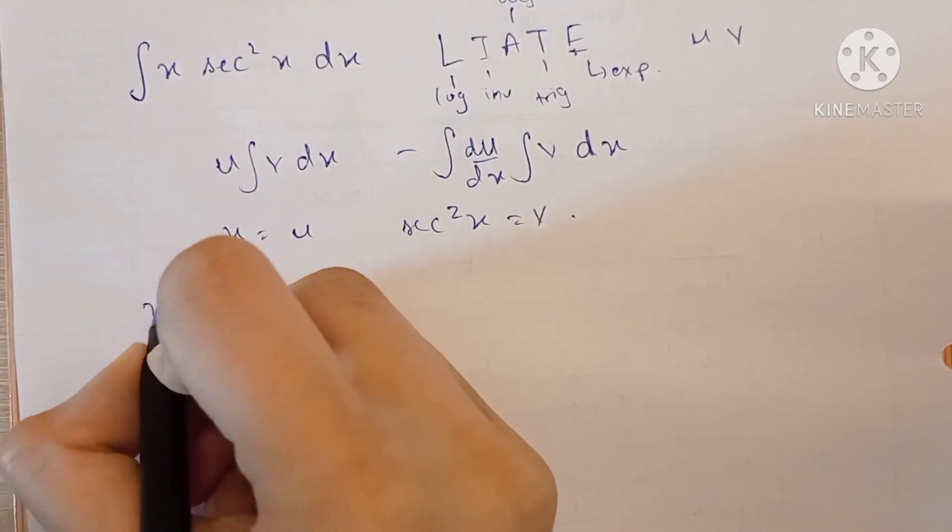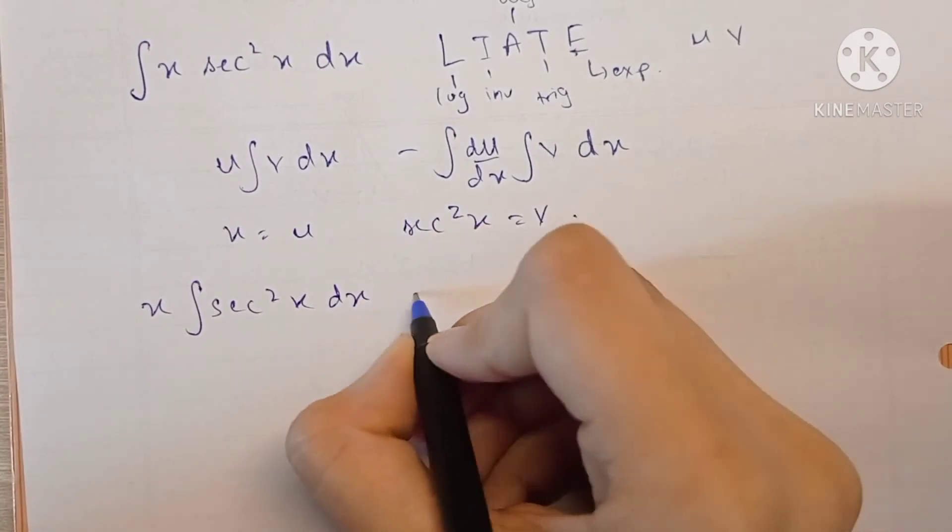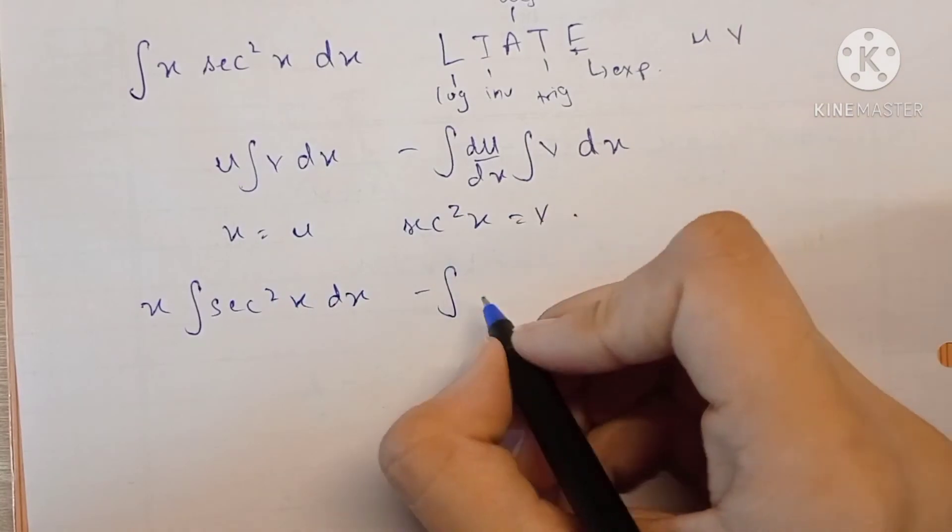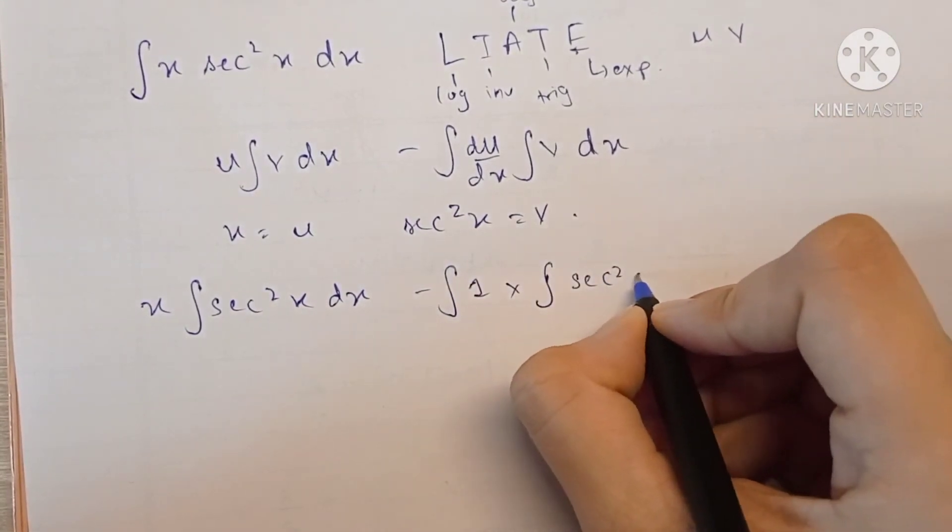u is x, so x into the integration of sec squared x minus integration of du, which would be 1, into integration of sec squared x.